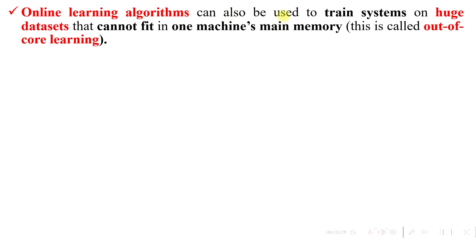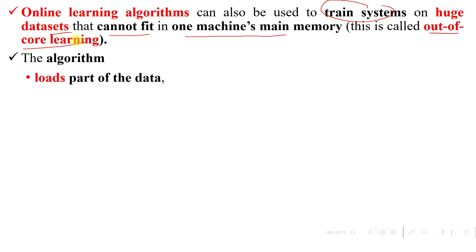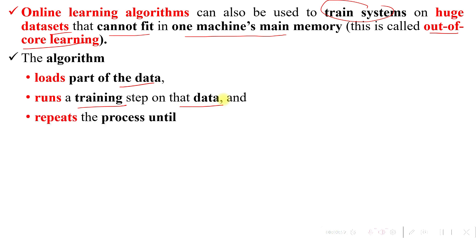Online learning algorithms can also be used to train systems on large datasets that cannot fit in a machine's main memory — this is called out-of-core learning. The algorithm loads parts of the data, runs a training step on that data, and repeats the process until it has run on all the data.